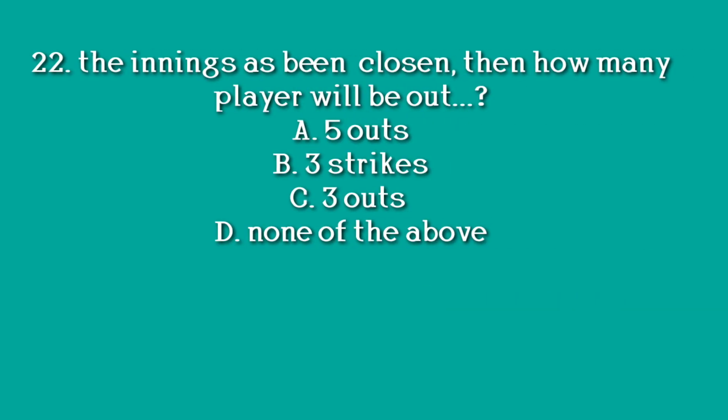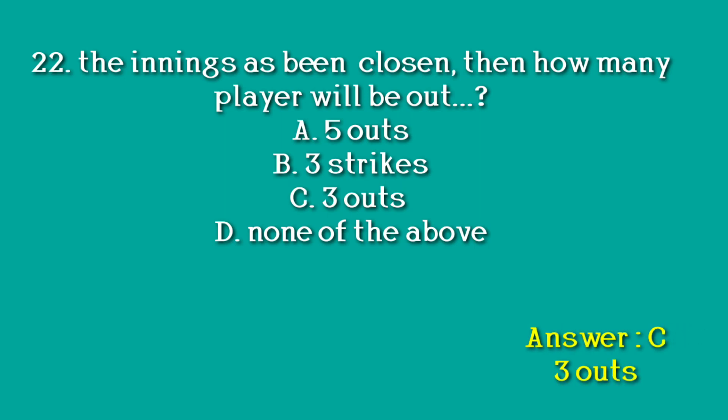Question number 22: When the innings are closed, how many players will be out? Option A. 5 outs. Option B. 3 strikes. Option C. 3 outs. Option D. None of the above. Answer: C. 3 outs.